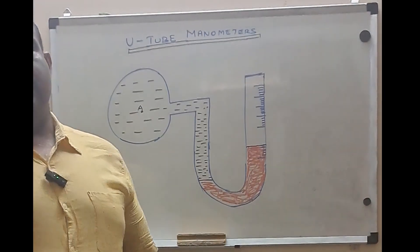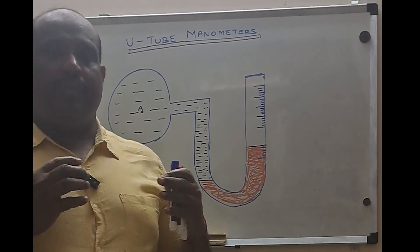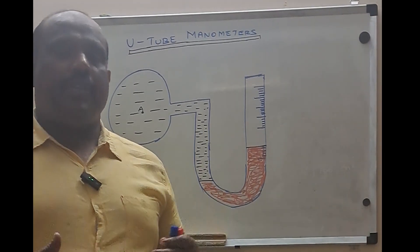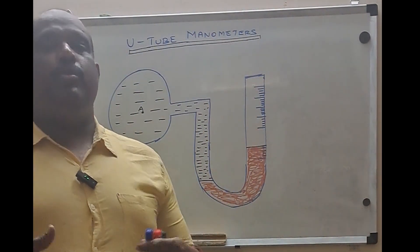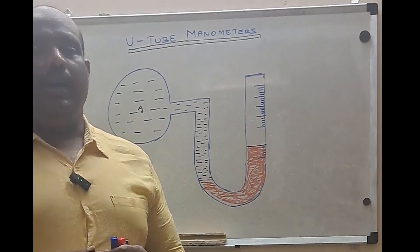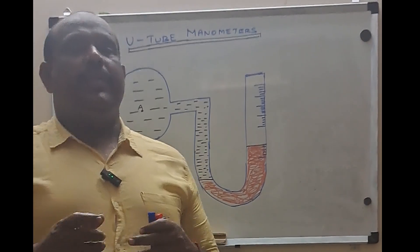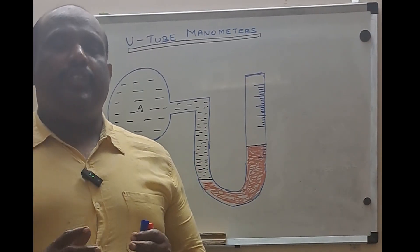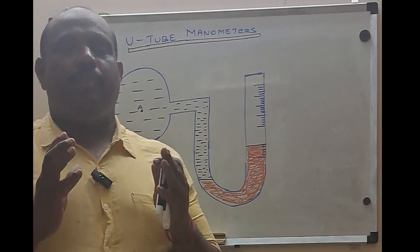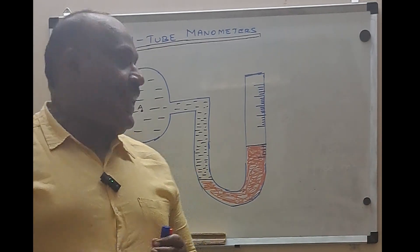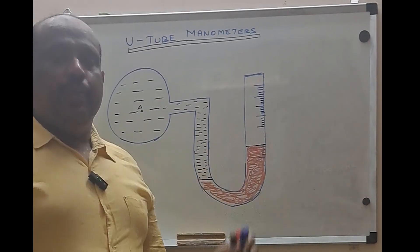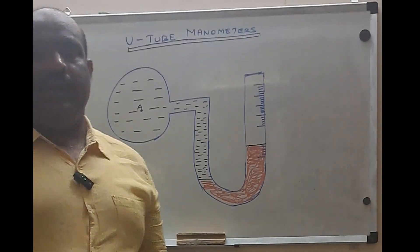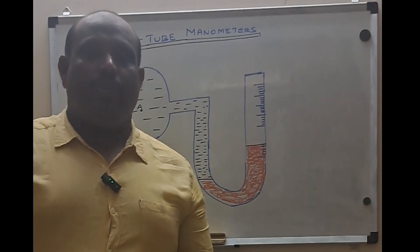This particular device also is going to measure the pressure of a liquid, namely the gauge pressure — that is the pressure which is above the atmosphere. Here, instead of using a vertical tube, we are going to use a tube which is U-shaped, and hence it is called as the U-tube manometer.